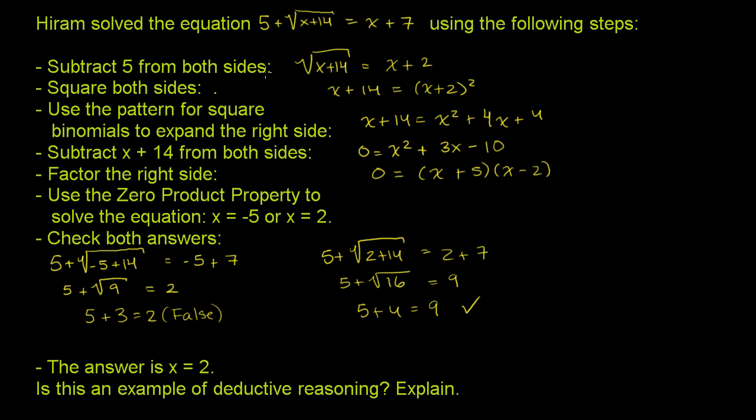He subtracted 5 from both sides. Yeah, that's reasonable enough. That got that 5 out of the way, and then 7 minus 5 is 2.